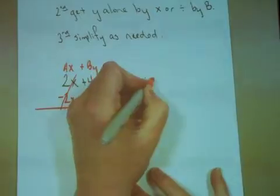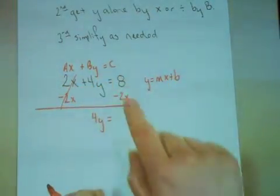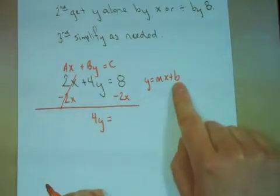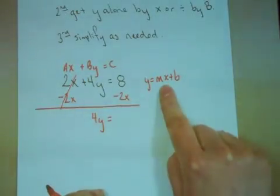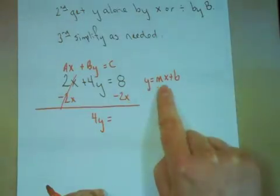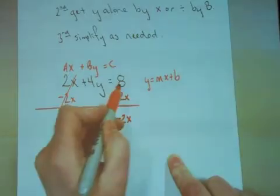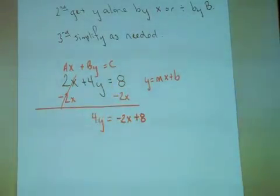Remember, my goal is to get in y equals mx plus b form. So who should go first, the thing that's going to be the b value or the thing that's going to be the x term? We want that x term to be written right after the equal sign. So I'm going to put the negative 2x first. This 8 was positive, so I write plus 8. There's step 1.